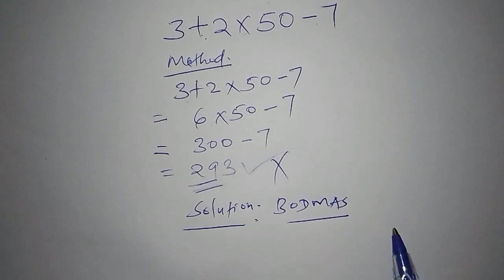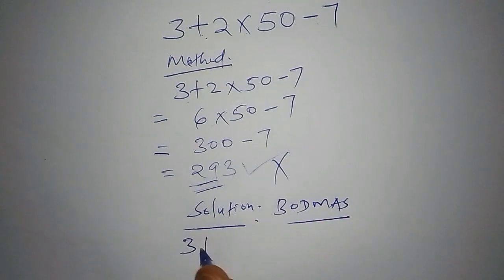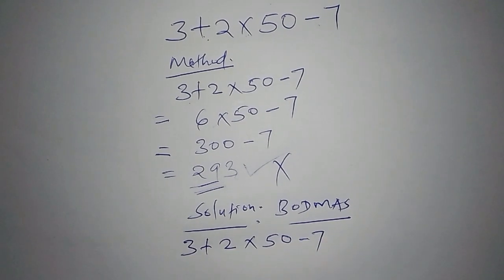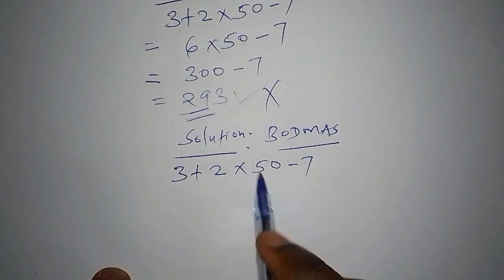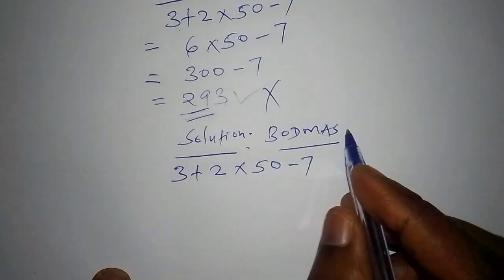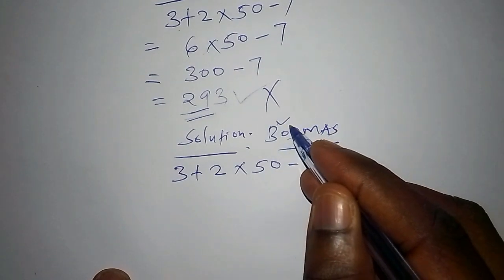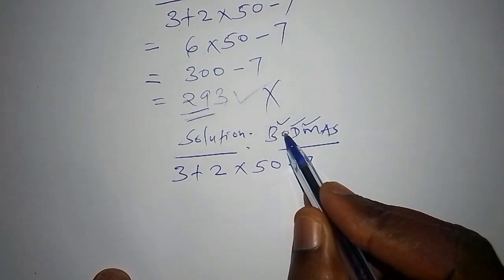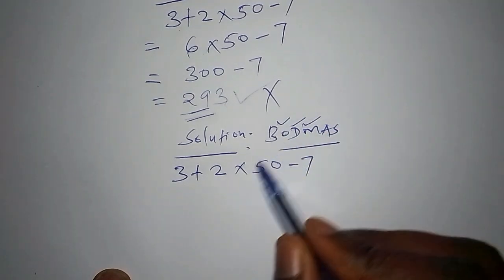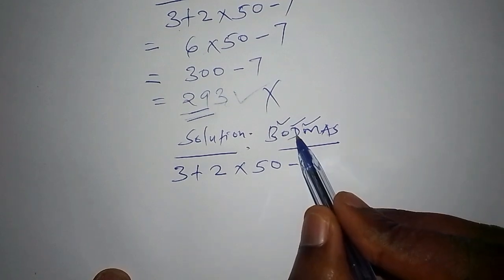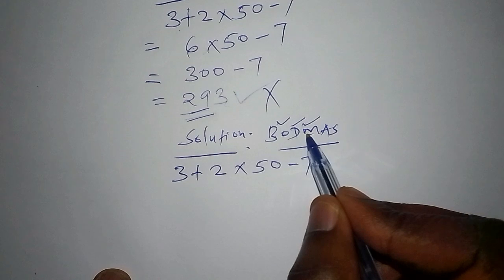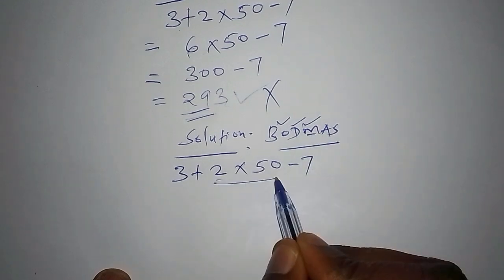Let's begin and write our solution. So we have 3 add to 2 multiply by 50 subtract 7. So the first part that we need to do is that we need to check the BODMAS. B stands for bracket, O stands for of, and D stands for division. So these three we don't have. We don't have the brackets here. We don't have the sign for of, and we don't have the signs for division. The only sign that you're having is the sign for the multiplication part of it. And so we need to start with this multiplication.